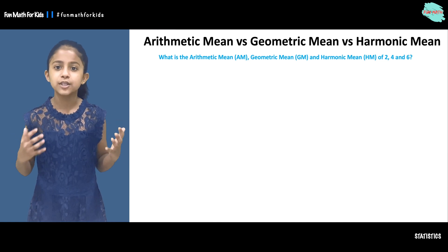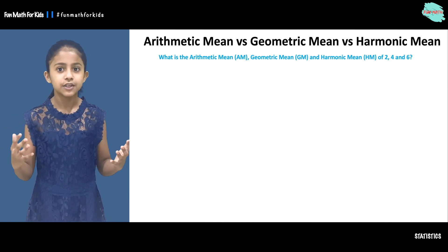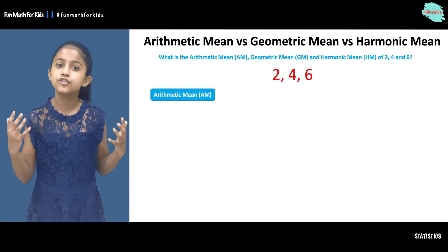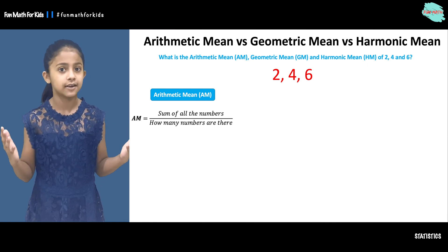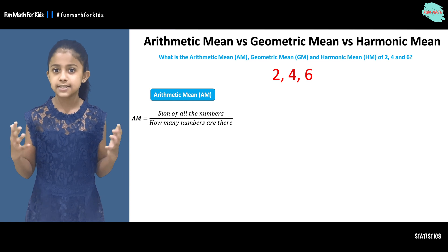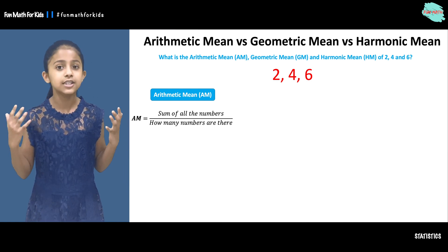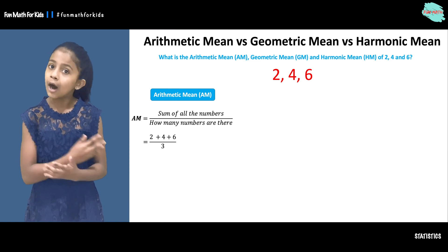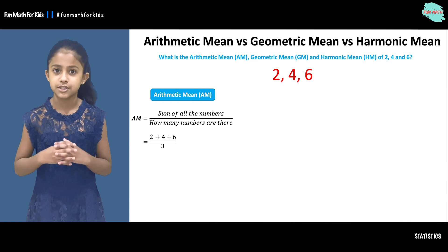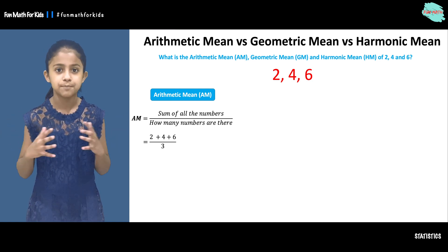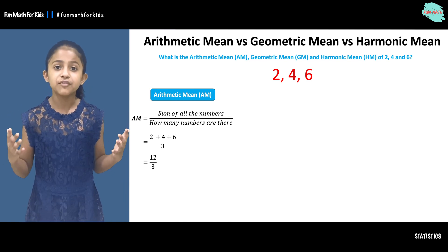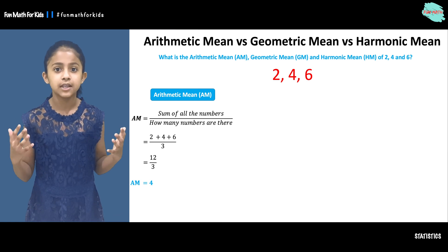What is the arithmetic mean, geometric mean, and harmonic mean of 2, 4, and 6? Let's first find out the arithmetic mean of 2, 4, and 6. The formula is the sum of all the numbers over how many numbers there are. The sum of 2, 4, and 6 is 12, and there are 3 numbers, so we have 12 over 3, which gives us the arithmetic mean of 4.